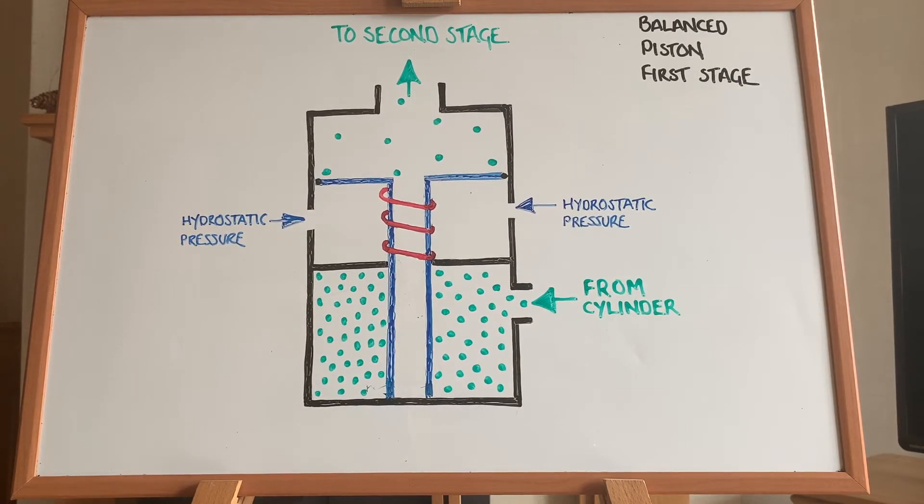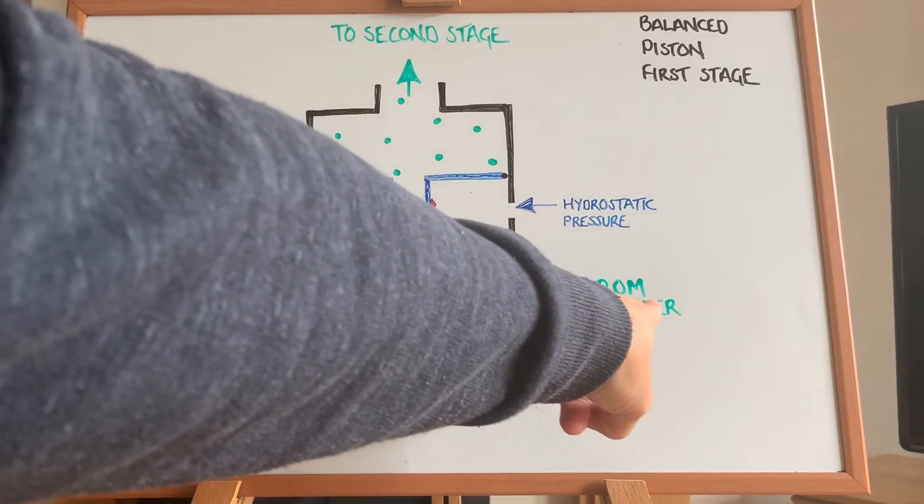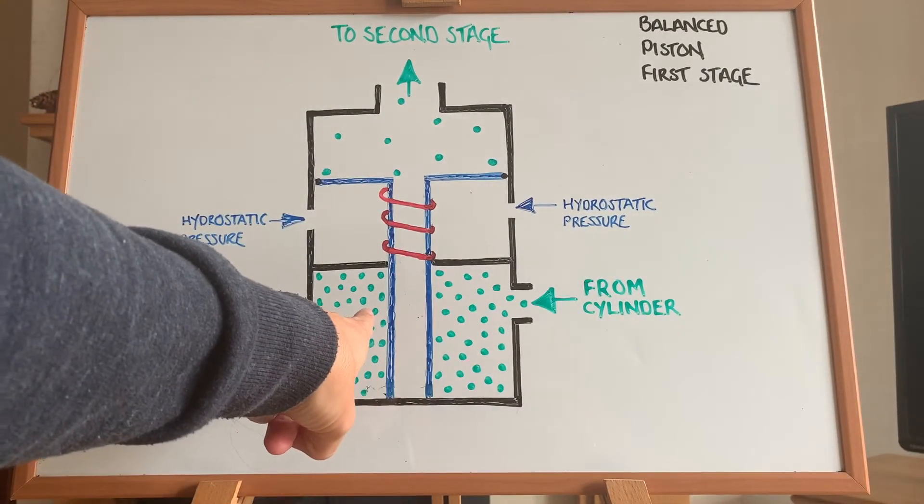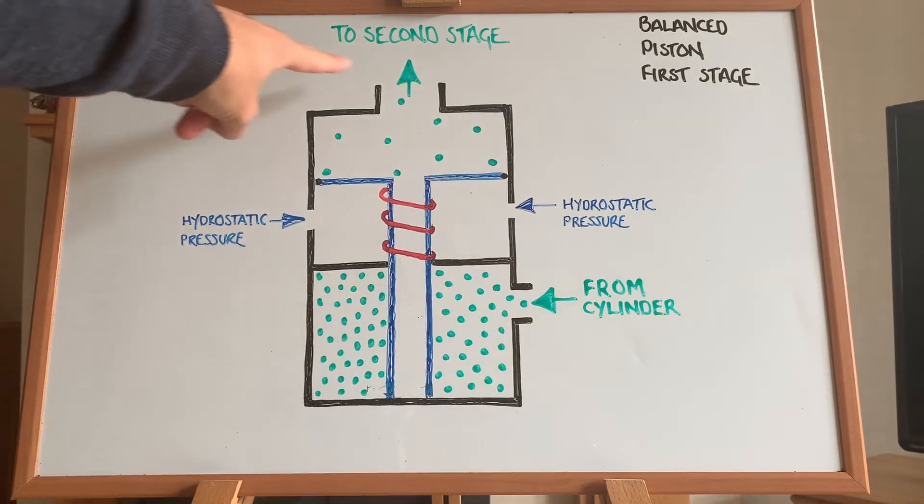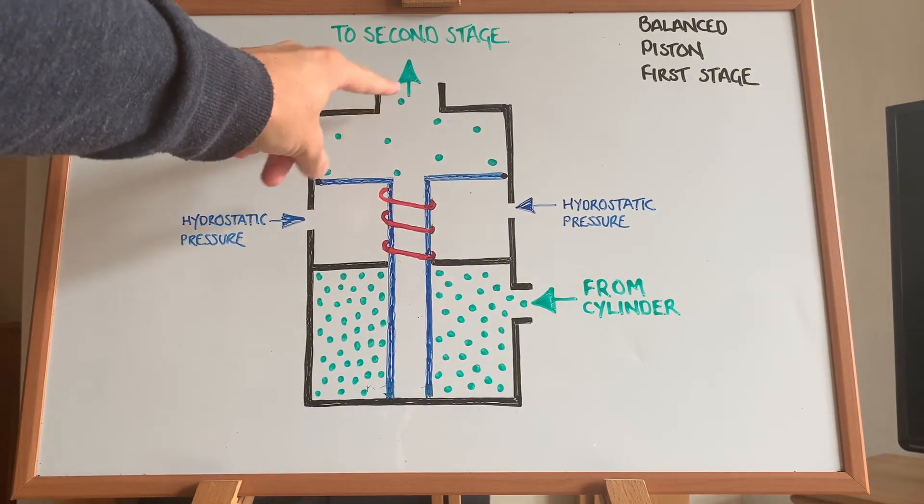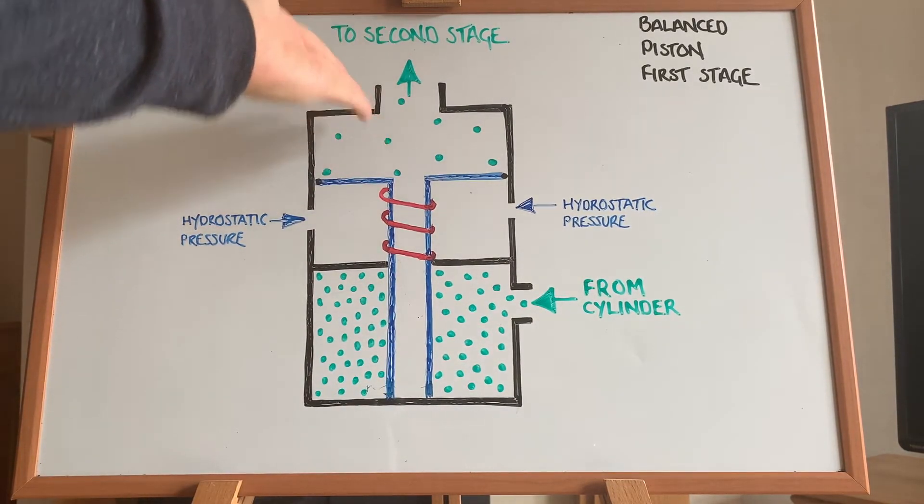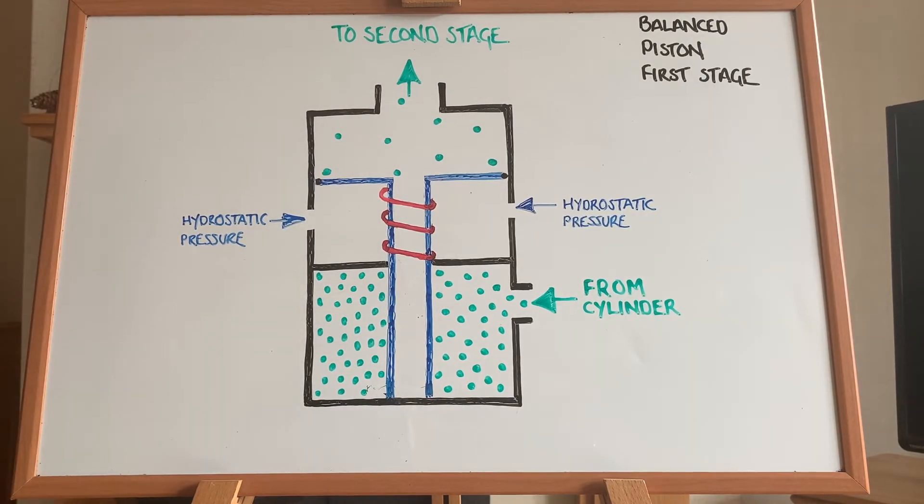So how does this all work? Well, once everything is connected, we see we have high pressure gas coming in from the cylinder into this chamber. We also have the intermediate pressure chamber, which leaves and goes towards the second stage, which is where the diver inhales from.